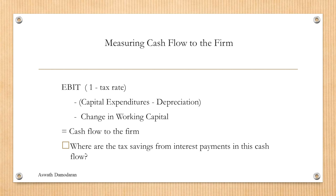Cash flow to the firm is cash flow belonging to both shareholders and debt holders. The starting point is EBIT — earnings before interest and taxes — times one minus tax rate to get after-tax operating earnings. Then you exclude net capital expenditure, which is the difference between capital expenditure and depreciation and amortization. Depreciation is for tangible assets and amortization is for non-tangible assets. Then subtract change in working capital to get cash flow to the firm.